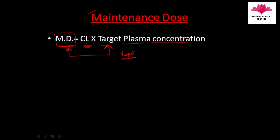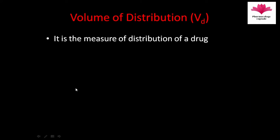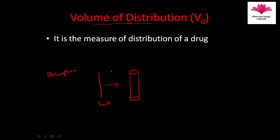Now we will study volume of distribution. Before studying volume of distribution, we will start with absorption. Absorption is the movement of a drug from its site of administration to the systemic circulation, or bloodstream, or vascular compartment.